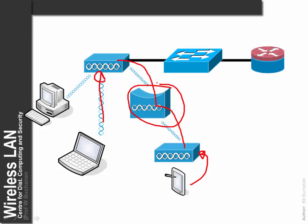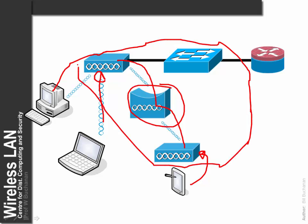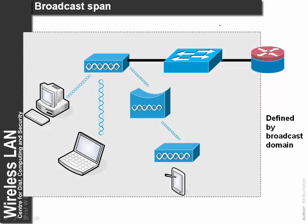And then we have a switch. A key concept is the broadcast domain, which covers the whole network up to the point bounded by a router port. A node here can communicate directly with a node over here because it is in the same broadcast domain. A bridge extends the broadcast domain, along with a switch.